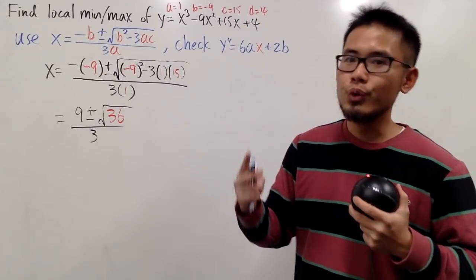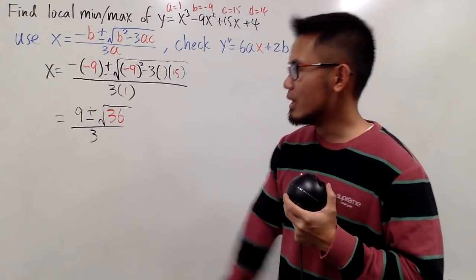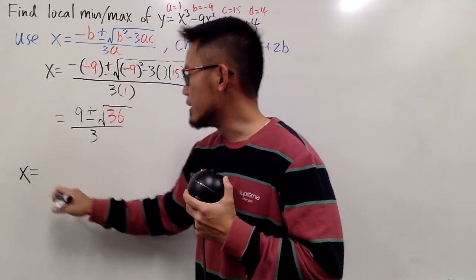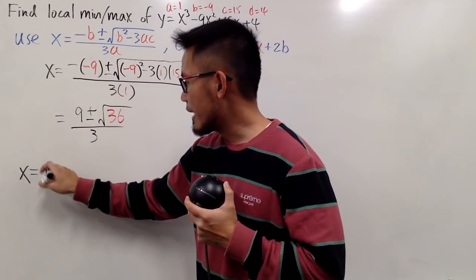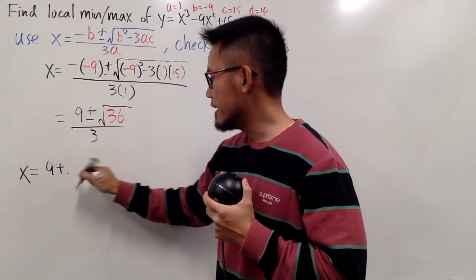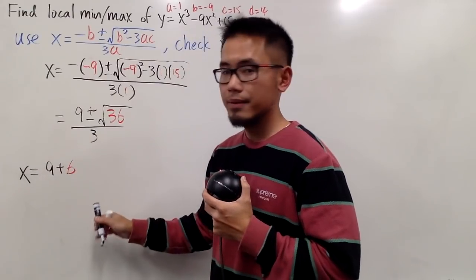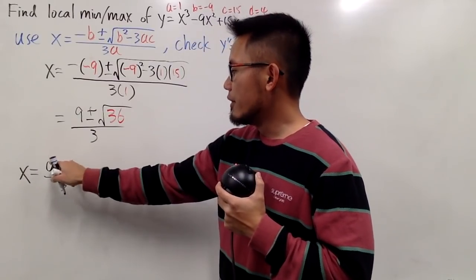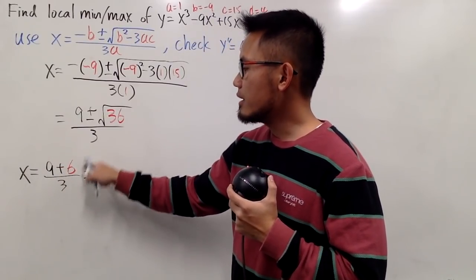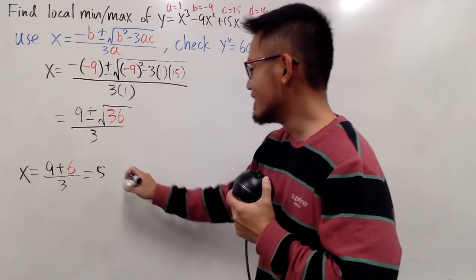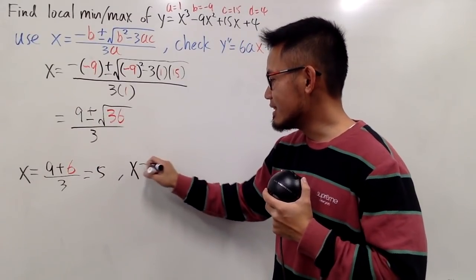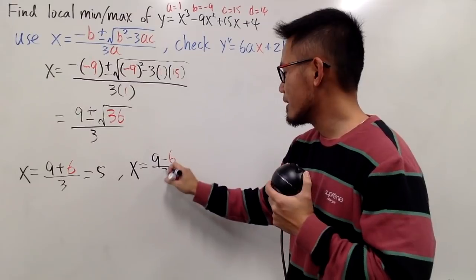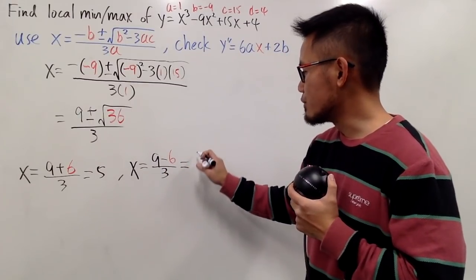And then we still divide this by 3 times 1, which is 3. And now, we have two X values from here, because the inside is a positive number. So let's break this down. The first X value is when we have 9 plus square root of 36, that's just a 6, and then divide it by 3. We can work this out real quick. 9 plus 6 is 15, over 3 is just 5. And the other one, we have X is equal to 9 minus square root of 36, which is 6, and over 3. And on the top, we have 3. On the bottom, we have 3. So this is going to be 1.